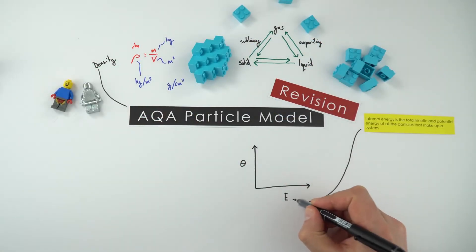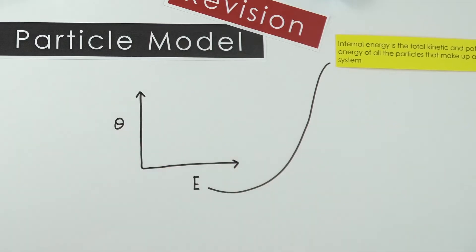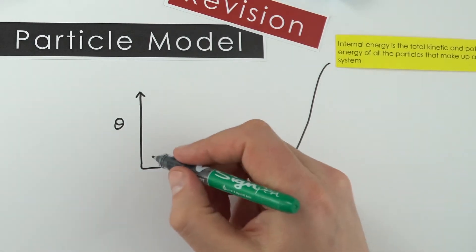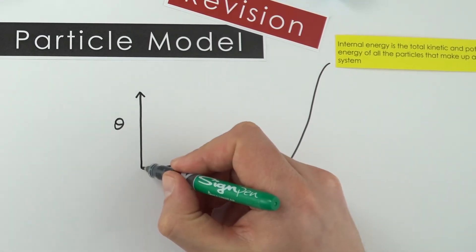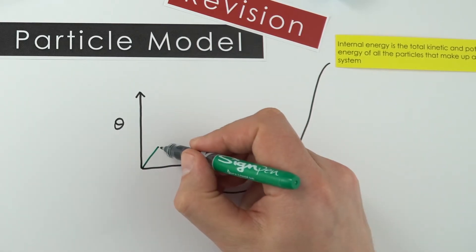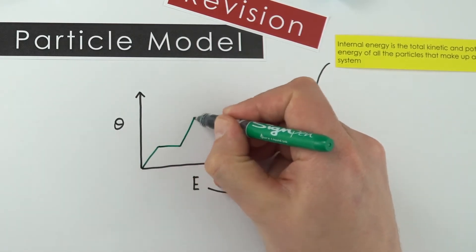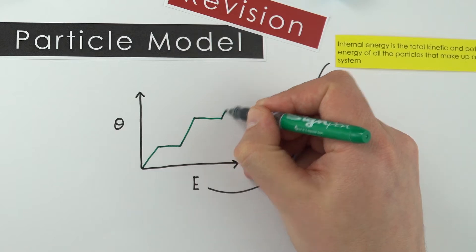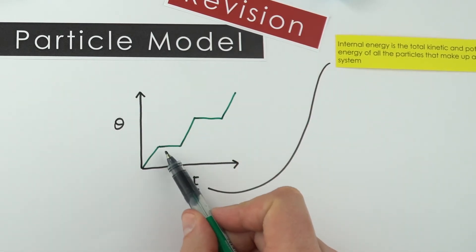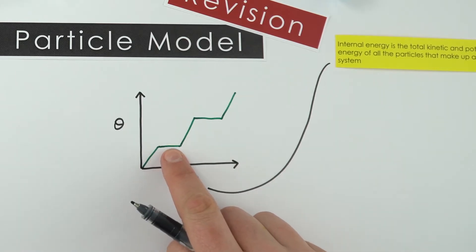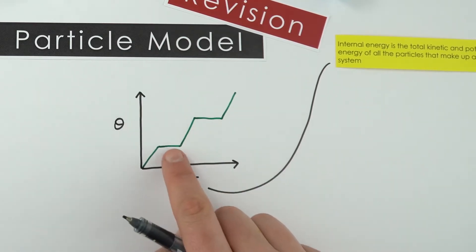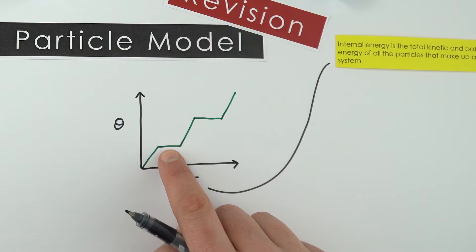If we look at the internal energy—this is what this E stands for here—and compare it to the temperature, what we find is that as you increase the internal energy, the temperature also increases until we get to this point where we have a change of state. When something changes state, the temperature is increasing, so it might be melting or boiling, and we have that happening at a constant temperature.